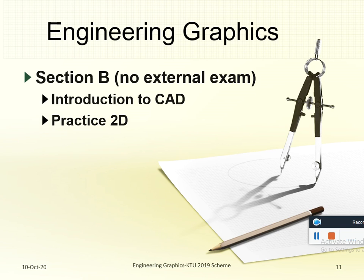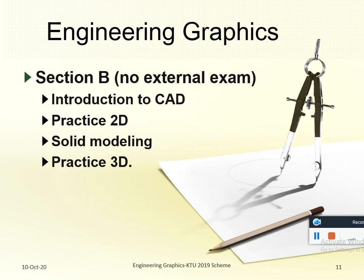Section B is Computer Aided Drafting, where we practice Two-Dimensional Drawing and Three-Dimensional Drawing. Engineering Graphics is a new topic for students who have passed Plus 2. It is the language of an engineer, so get ready to study the language of an engineer. Thank you.